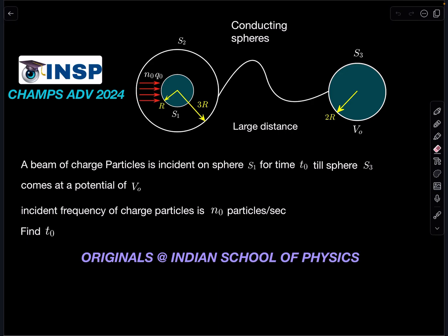There are three conducting spheres S1, S2, and S3. The radii are given as r, 3r, and 2r. The system of S1 and S2 is placed far away from sphere S3.